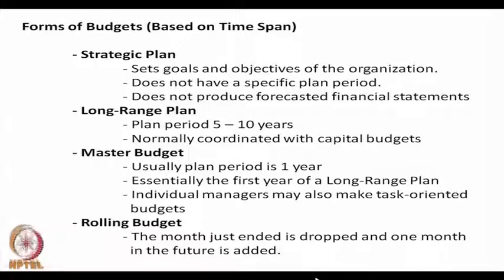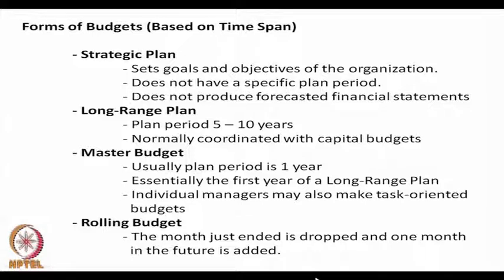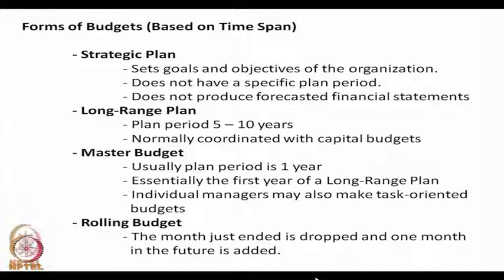The master budget, which is the subject for today, is usually made for a plan period of 1 year. Essentially, the first year of a long-range plan is the period for which a master budget is prepared. One can also make budgets for individual managers for individual tasks. In addition, it is possible to have a rolling budget where, when one period elapses, one more month is added and the budget is updated or freshly prepared. This is called a rolling budget.